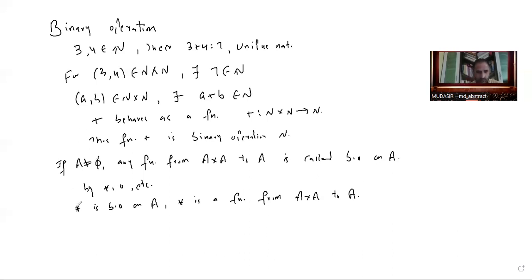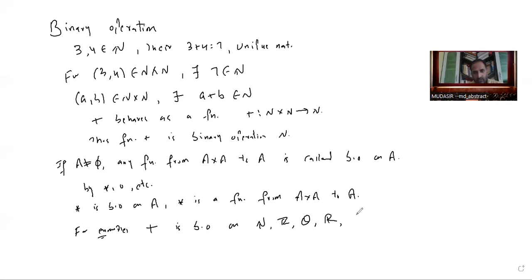For example, considering fundamental arithmetic operations: addition is a binary operation on naturals, integers, rationals, real numbers, and complex numbers. For subtraction, it is a binary operation on integers, rationals, reals, complex numbers — in fact every superset of ℤ.